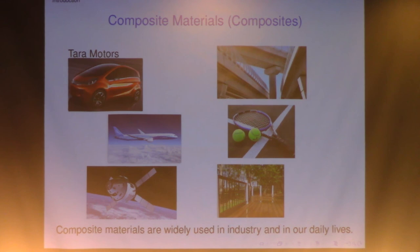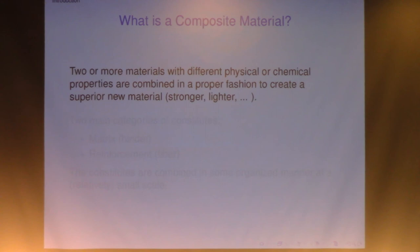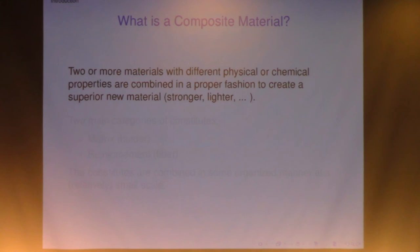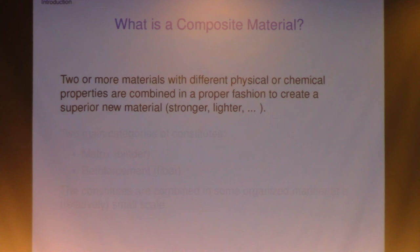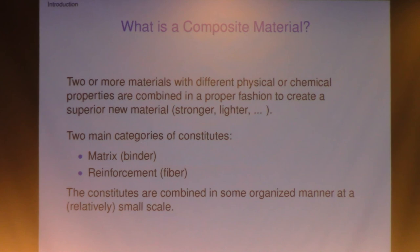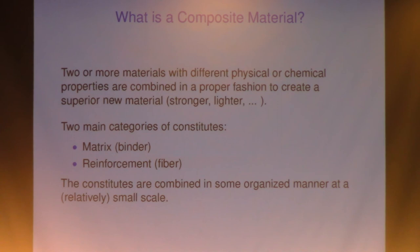However, in modern industry and daily life, we're dealing with a lot of composite materials. So what is a composite material? You have two very different materials mixed together, combined in some proper fashion to create a new material which might have the desired property. The basic components you have here, at least two: one is referred to as matrix or binder which holds things together, another is a reinforcer, typically a fiber, glass fiber or carbon fiber.